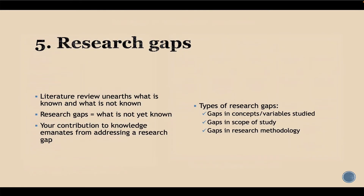The second-to-last section of the literature review chapter is the research gaps. This can only be identified once you have conducted a thorough literature review. It helps you know what is already known and what is not yet known — what is not yet known is what is referred to as research gaps. Your contribution to knowledge should emanate from addressing one or more research gaps that you have identified.